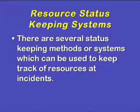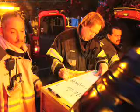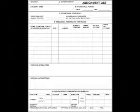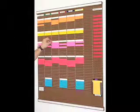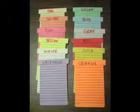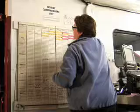Resource status keeping systems: there are several status keeping methods or systems which can be used to keep track of resources at incidents. There is manual record keeping on forms — the ICS provides many forms, such as the initial attack form 201, the check-in list form 211, and the assignment list for divisions form 204. There is also the card system, where different colored T-shaped cards are used for each kind of resource. The cards are formatted to record various kinds of information about the resource and are filed in a box or placed on a rack by current location.